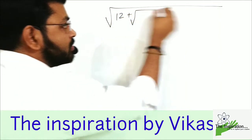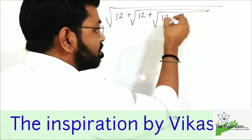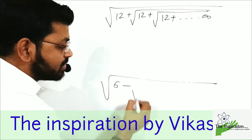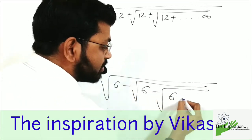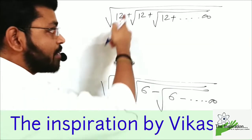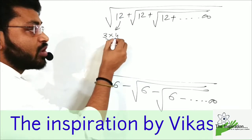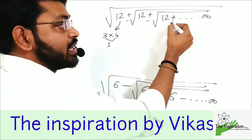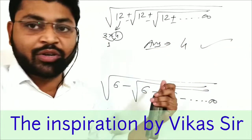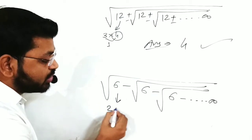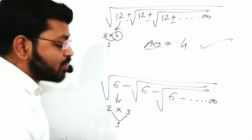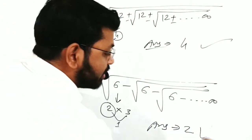Next example: √(12 + √(12 + √(12 + ...))) infinite. We factorize 12 as 4×3; the difference is 1 and the answer is 4. For √(6 - √(6 - √(6 - ...))): minus means smaller, so the answer is 2.